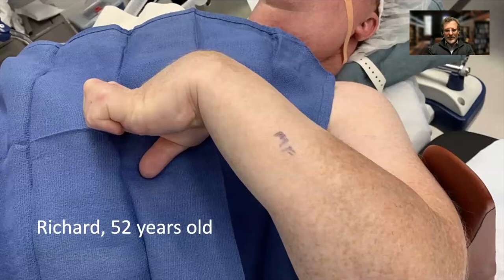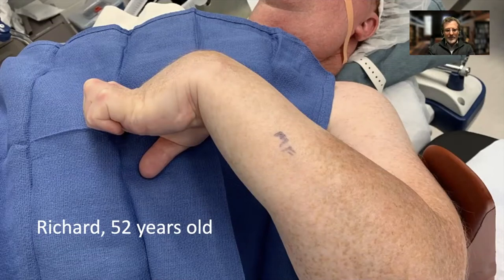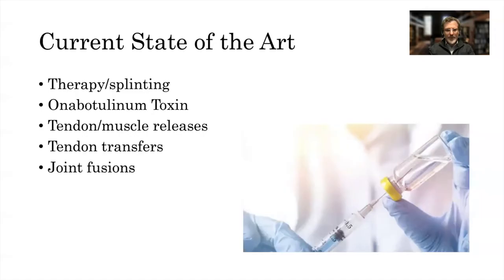That brings us to Richard, 52 years old. You can see he's under general anesthesia — this is what his arm looks like. His elbow is tight, his wrist is in flexion, and he has this odd hyperextension of his metacarpophalangeal joints and flexion of his IP joints. The current state of the art we can offer Richard includes therapy and splinting, Botox injections, tendon-muscle releases, tendon transfers, and joint fusions.